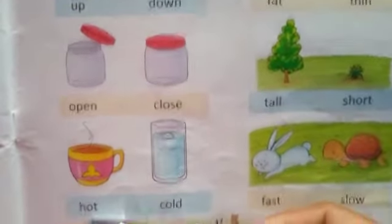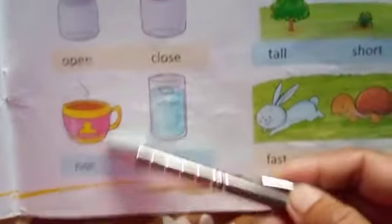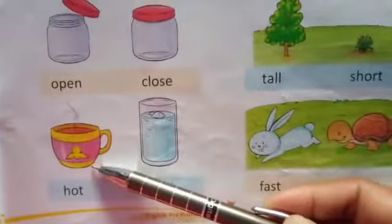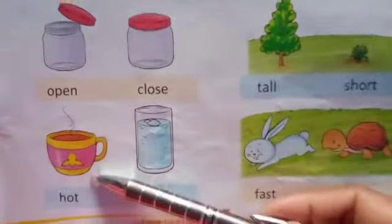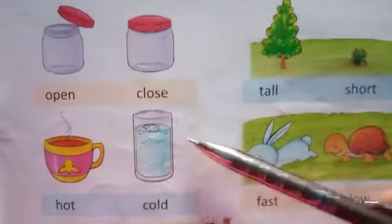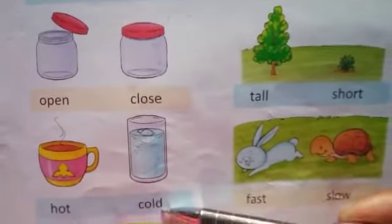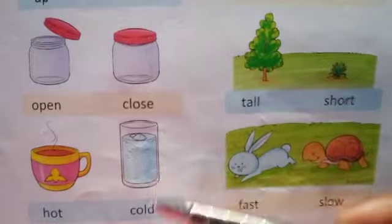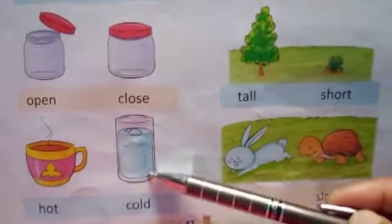Hot. H-O-T. Hot means garm. Hot ka opposite hoga? Cold. C-O-L-D. Cold means thandha.